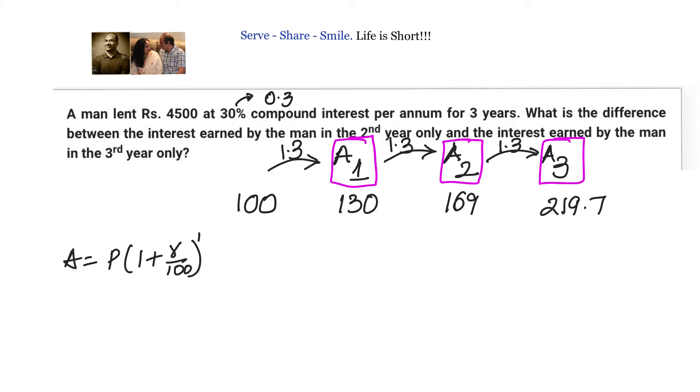What is the interest earned by the man in second year? That is nothing but A2 minus A1. A2 minus A1 is 39. Similarly, what is the interest earned by the man in third year only? That is 219.7 minus 169, or A3 minus A2, which equals 50.7.